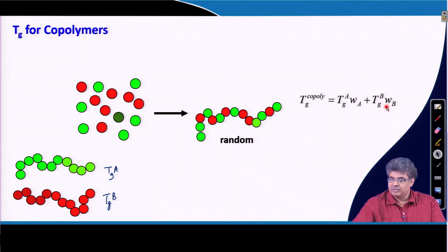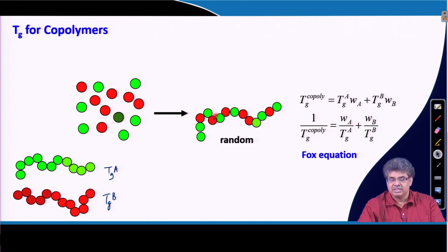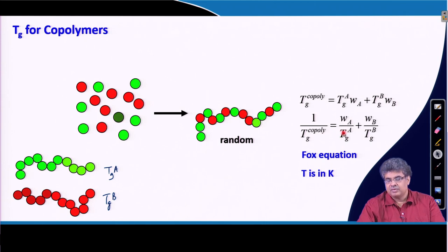This equation generally overestimates the Tg of the copolymer. Hence, there is another equation proposed by Fox, given by this expression, where again W_A and W_B are the weight fractions of A and B respectively in the copolymer, and Tg_A and Tg_B are the homopolymer Tg values. Remember, in this case we need to always express the temperature in Kelvin, not in centigrade or Fahrenheit.